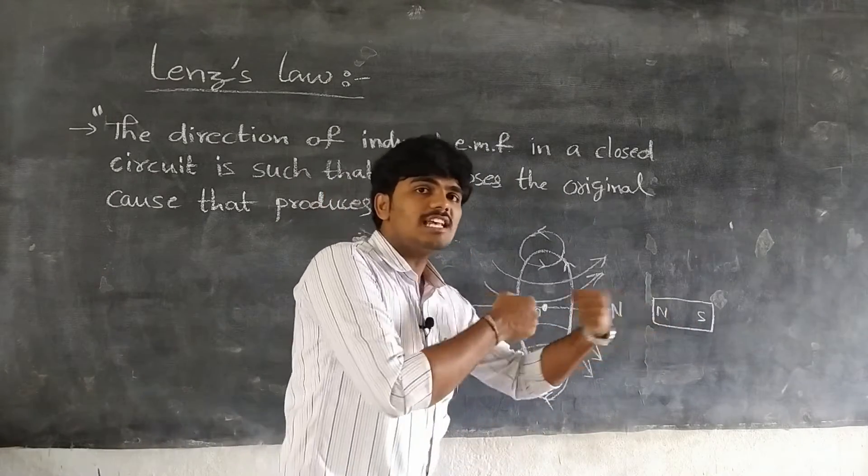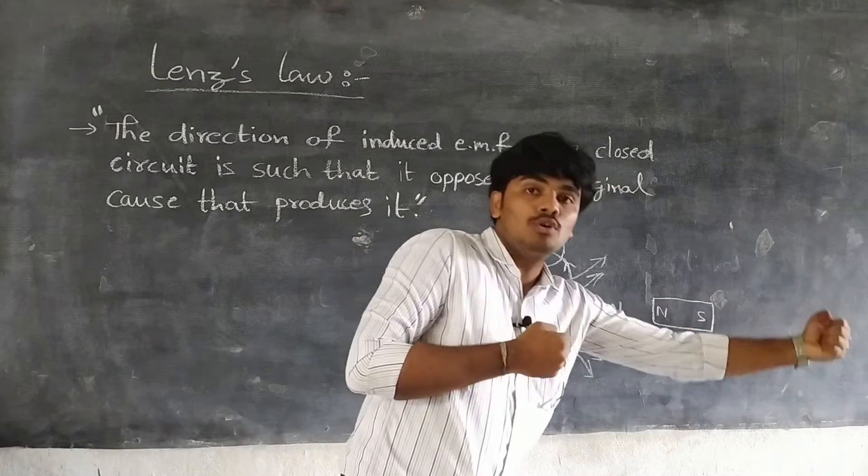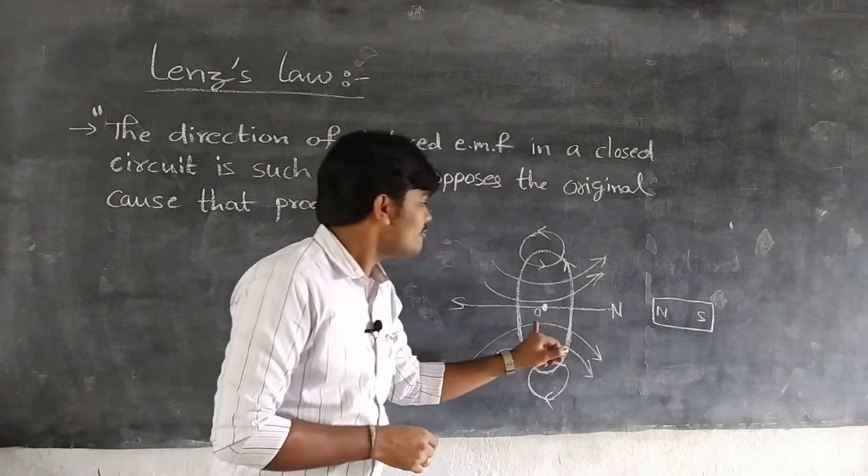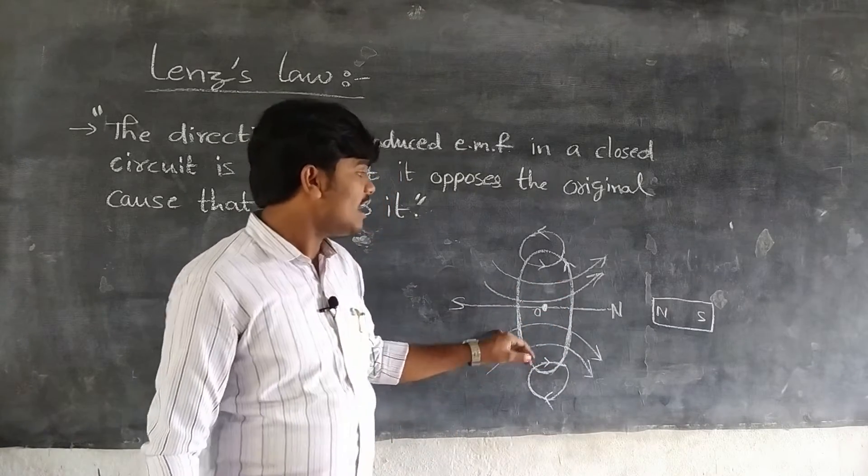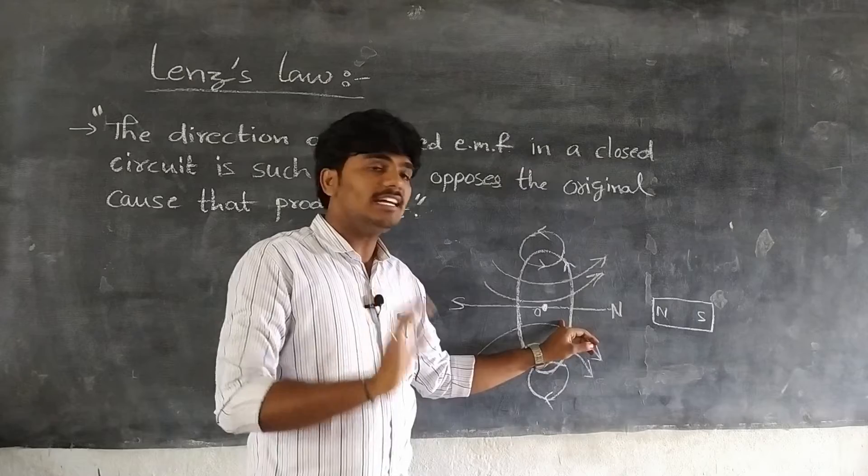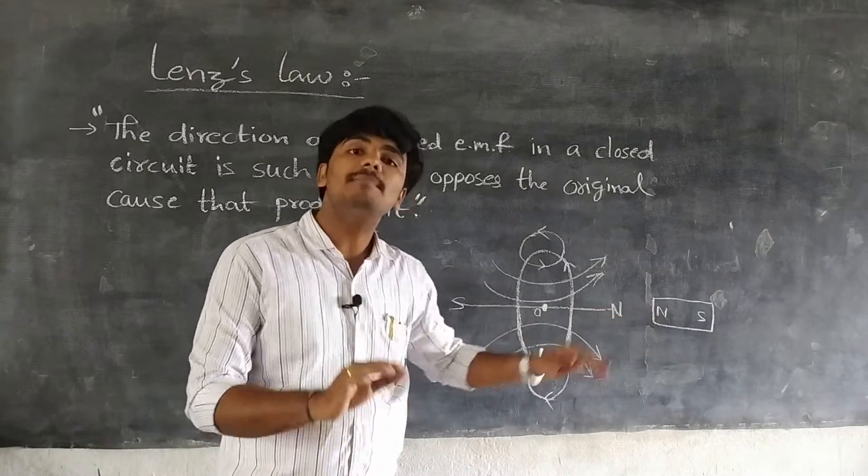Due to this force of repulsion, the motion of the magnet is opposed. This causes a change of magnetic flux in the coil. Thus, the direction of induced current is such that it opposes the motion of the magnet.